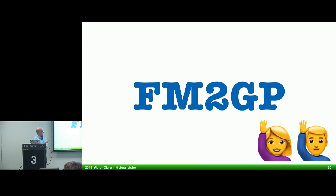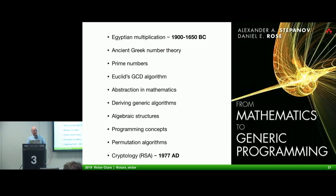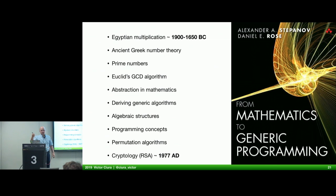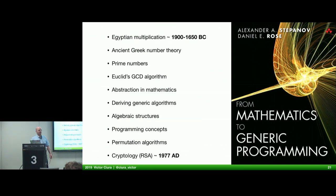Another more obscure acronym: FM2GP — From Mathematics to Generic Programming. This book follows a story starting with Egyptian multiplication around 2000 BC, going through number theory, Euclid's GCD algorithm, various abstractions and stages in mathematics, and deriving generic algorithms all the way up to the 20th century with RSA. It's a fantastic book with history tidbits and very entertaining to follow along.